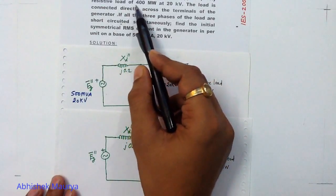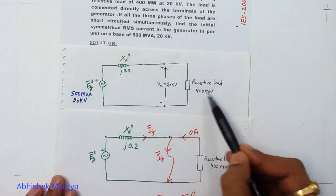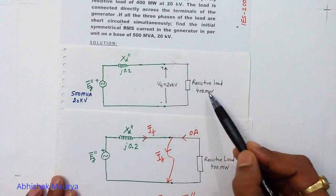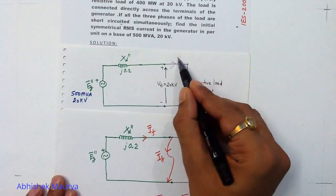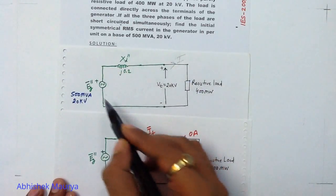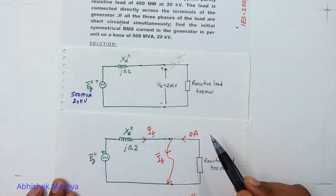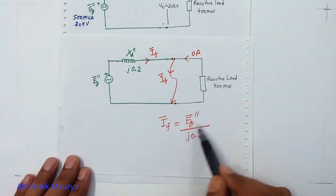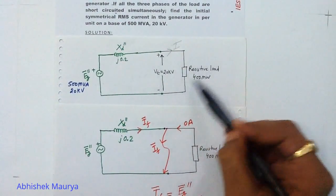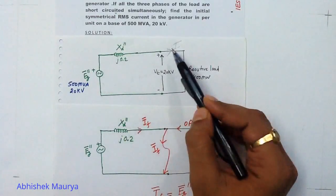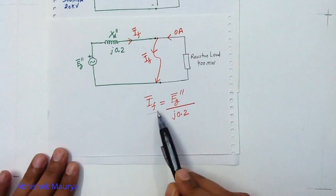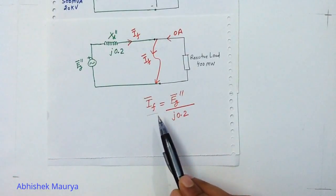The examiner has given a resistive load of 400 megawatt operating at a terminal voltage of 20 kV. From these load specifications we will first find out the current flowing in the circuit, then apply KVL to find the sub-transient internal voltage, and then put that value into the formula to calculate the fault current. There are three steps: first, find the current from given specifications; second, find the sub-transient internal voltage; third, calculate the fault current.